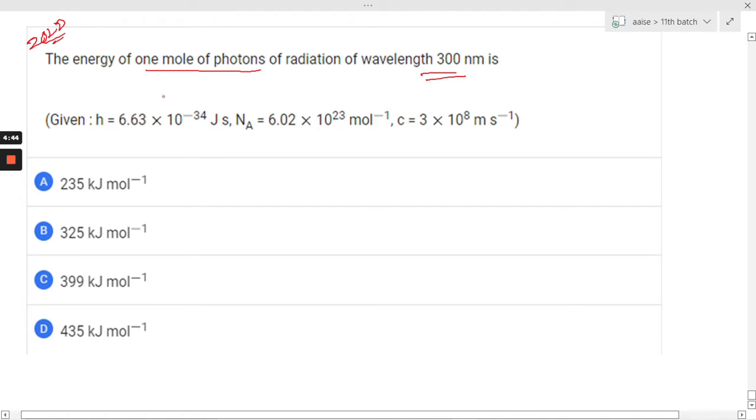So here it is given number of photons equals Na, that is Avogadro number, equals 6.022 into 10 raised to 23. Lambda is given 300 nanometer, further it can be written as 300 into 10 raised to minus 9 meter.